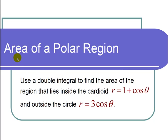This is a video on the area of a polar region. The question states, use a double integral to find the area of the region that lies inside the cardioid r equals 1 plus cosine of theta and outside the circle r equals 3 cosine of theta.